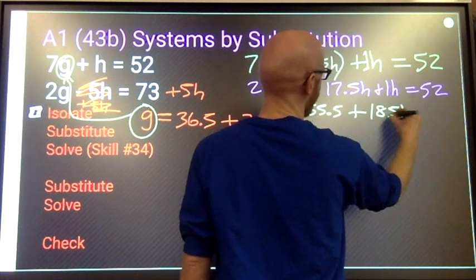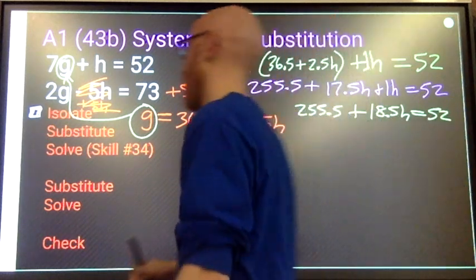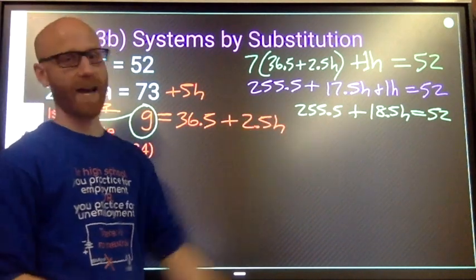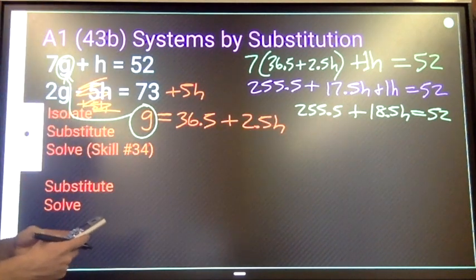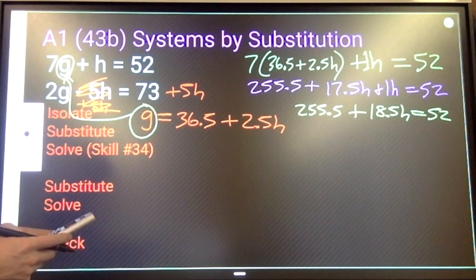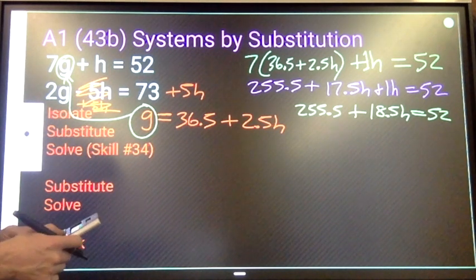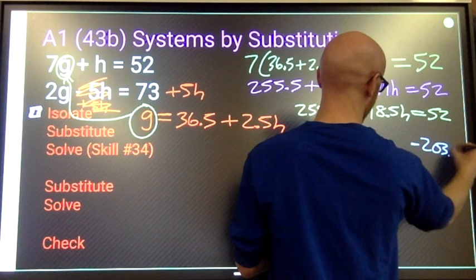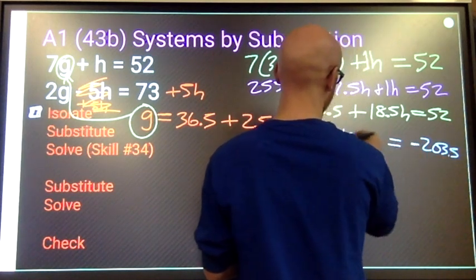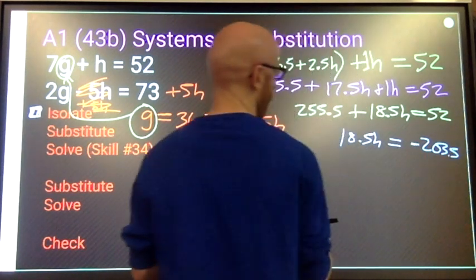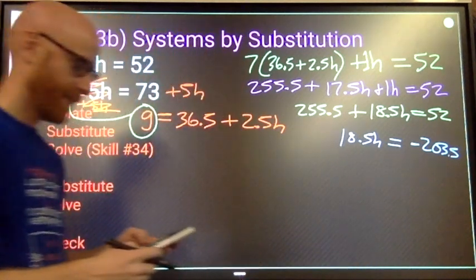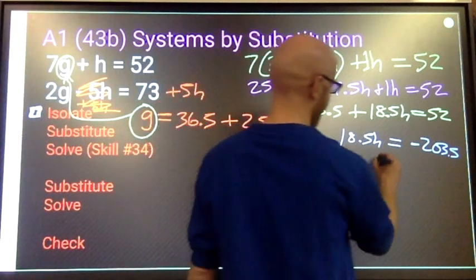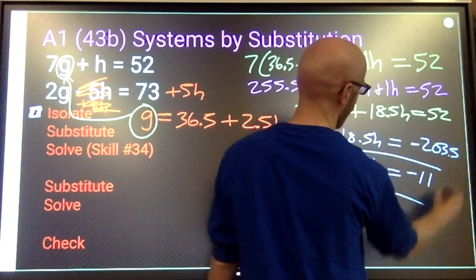Use some opposite operations. Subtract both sides by 255.5, so 52 minus 255.5—255.5—is negative 203.5 equals 18.5h. Divide both sides by 18.5, and we got h equals negative 11.